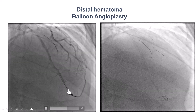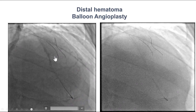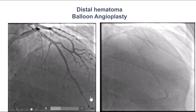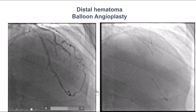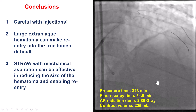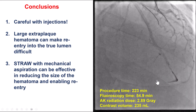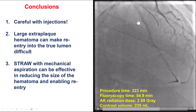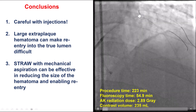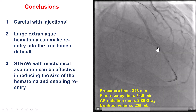There remained some hematoma distally — recalling that the dissection extended all the way to the apex, it was no surprise that some extraplaque hematoma persisted. We performed balloon angioplasty; cutting balloon angioplasty can be done in this setting. We did achieve TIMI 3 flow and decided to let the vessel recover and heal spontaneously over time.